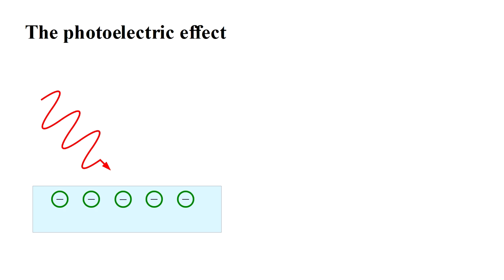But if a material is illuminated with low frequency light, represented in red here, no electrons are ejected, even if the light is very intense. On the other hand, if the illumination is high frequency light, represented here in blue, electrons are emitted even if the light is very weak.